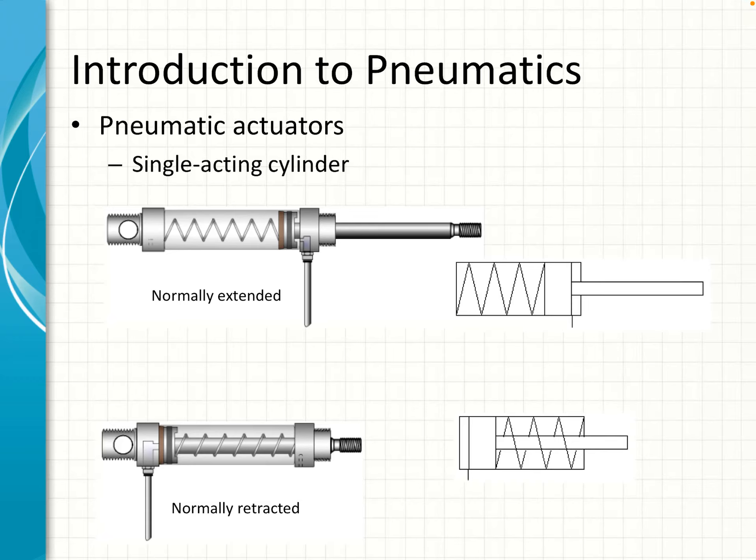In this video we're going to talk about pneumatic cylinders and valves. Here on this first slide we have a single acting cylinder, which is either normally extended or normally retracted, and we only have one input for the pneumatic pipe. For the bottom one, it's normally retracted — that's the more common design. If we put an air supply onto the pipe it will extend the cylinder; if we take it off, the spring will bring it back.